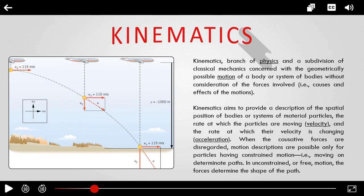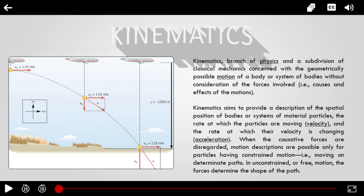First, what is kinematics? Kinematics is a branch of physics and a subdivision of classical mechanics concerned with geometrically possible motion of a body or a system of bodies without consideration of the forces involved, example causes and effects of the motions. Kinematics aims to provide the description of the spatial position of body or systems of materials, particles, and the rate at which the particles are moving, or what we call velocity, and the rate at which their velocity is changing, or their acceleration.